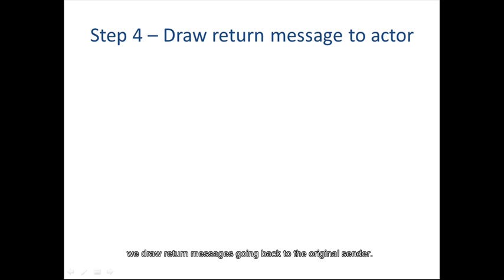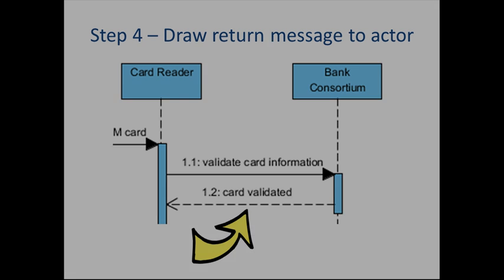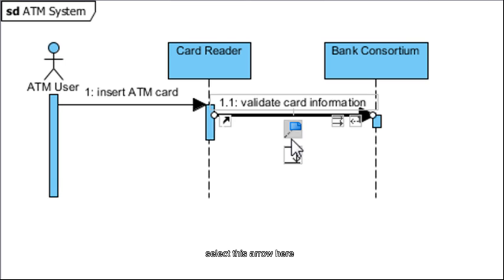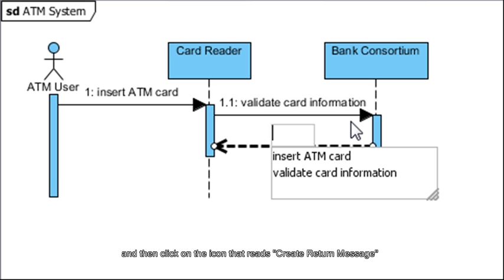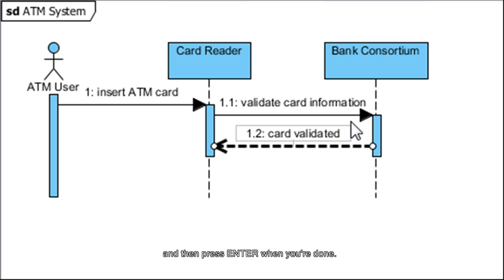In step 4, we draw return messages going back to the original sender. After getting a message from the Card Reader, Bank Consortium needs to return a message that the card has been validated fine. To draw that return message, select the arrow here and then click on the icon that reads Create Return Message. A dashed arrow pointing in the opposite direction will appear. In the message box, enter Card Validated and then press Enter when you're done.